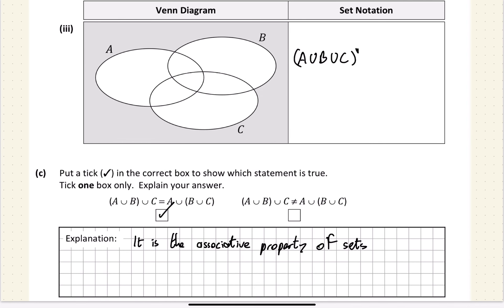That's what they're showing: that A union B, if you did that first and then union C, would be the same as if you union B and C first and then union A. Same thing. And that's the associative property. You can associate the brackets wherever you want. Okay, and that was question two.